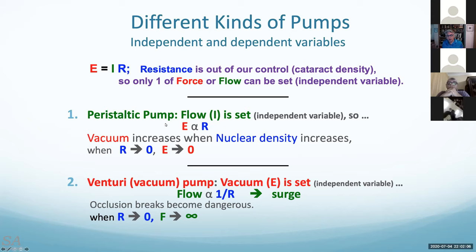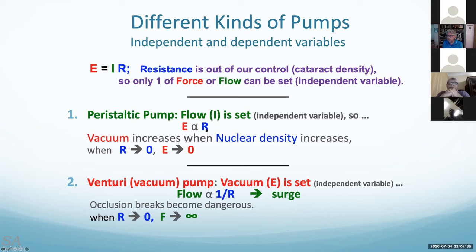In peristaltic pumps, flow is set as the independent variable. On FACO machines like Alcon or AMO, you set the flow rate, which becomes the independent variable. You cannot control R, the resistance of the aspirate. So E, the vacuum buildup on the FACO machine, is proportional to resistance — meaning that as you aspirate denser pieces of lens, the vacuum will build higher. The rate at which it builds is determined by how fast the flow rate is.